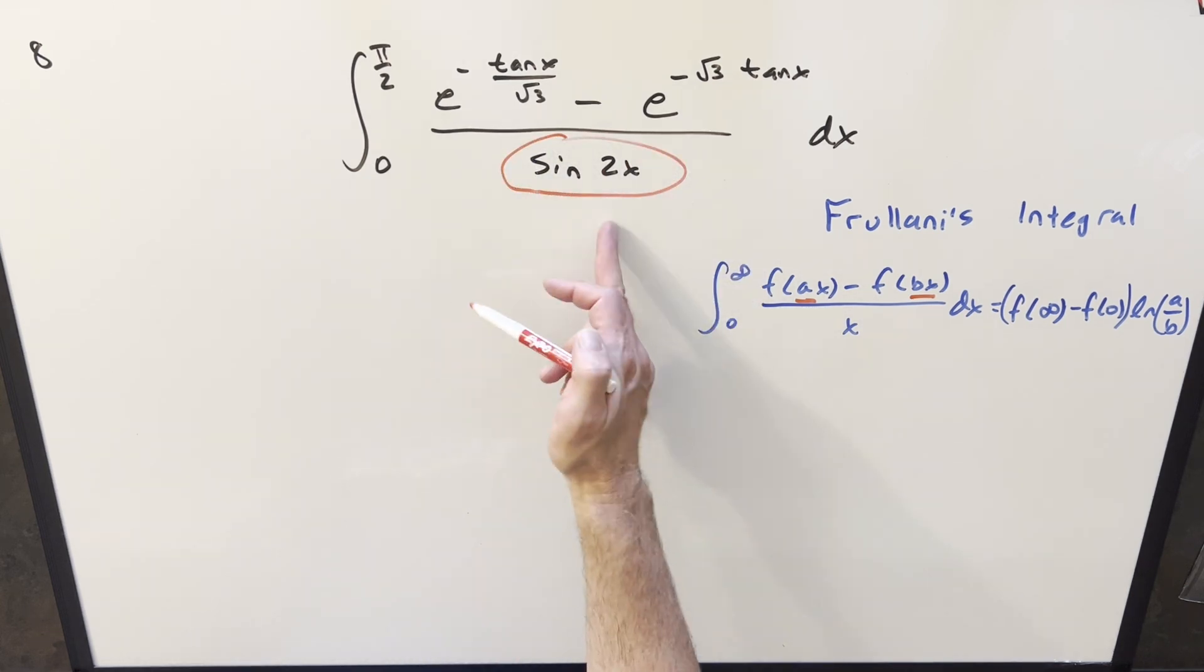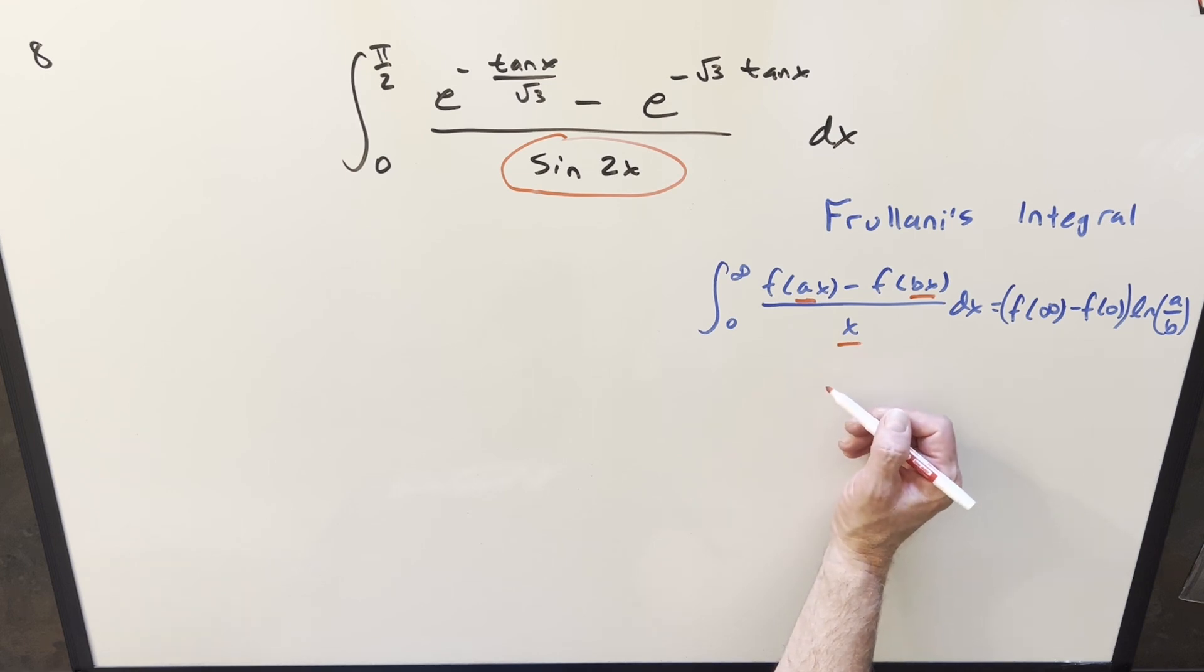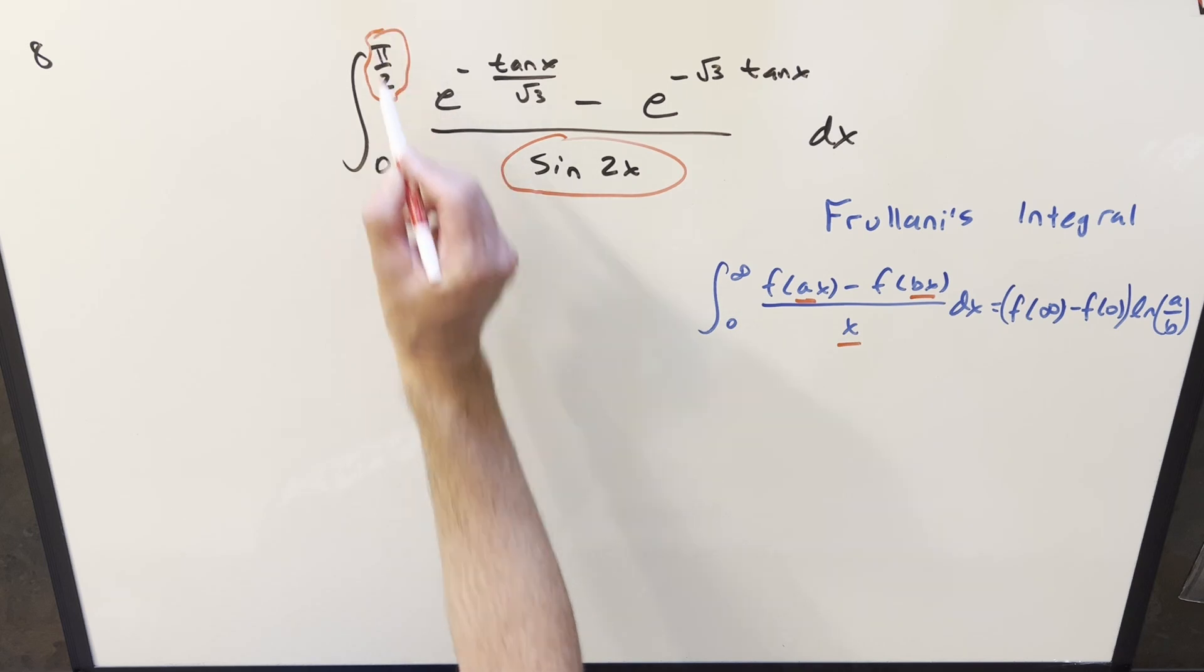First of all, we've got sine 2x in the numerator. In the formula, we need to have x. On the bounds, we're going from 0 to infinity, but here we're going to pi over 2.